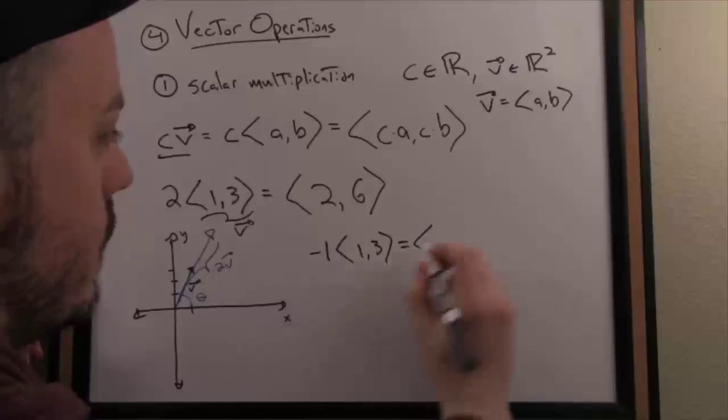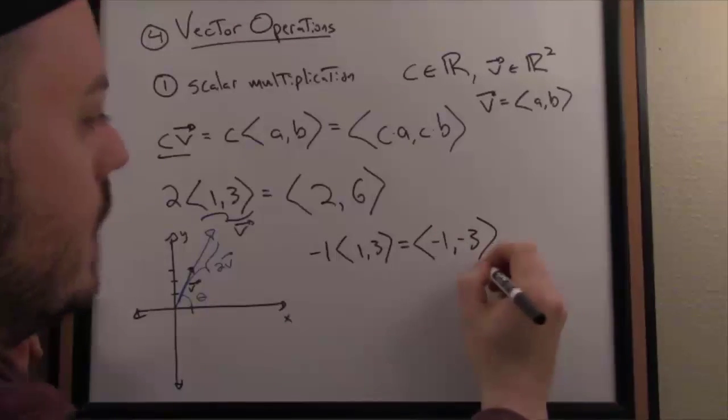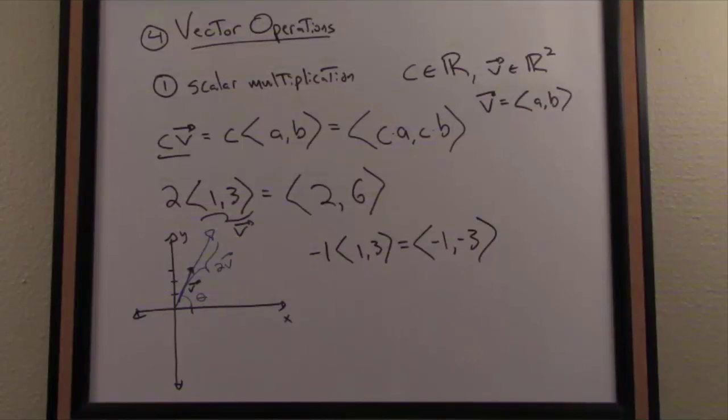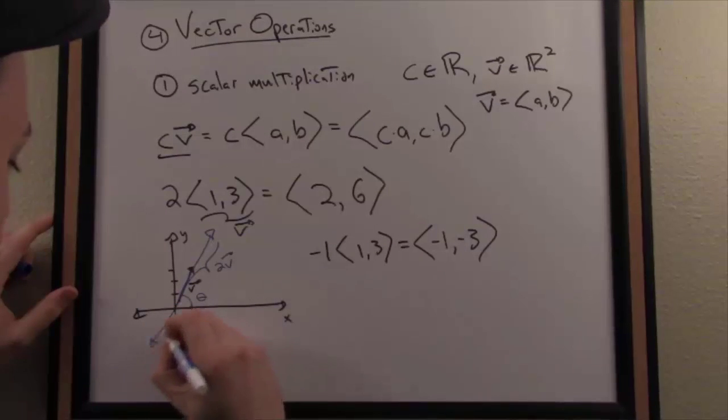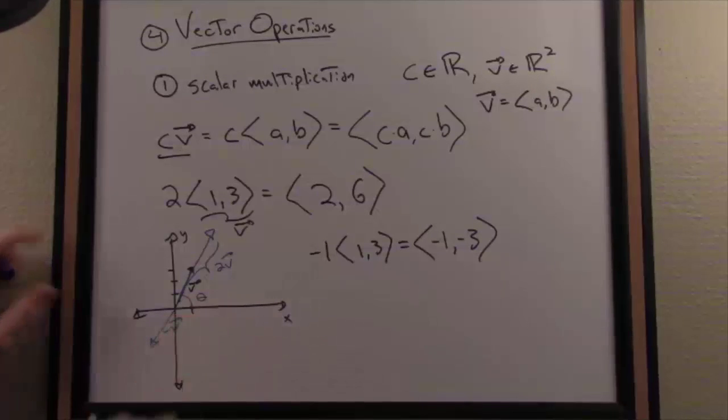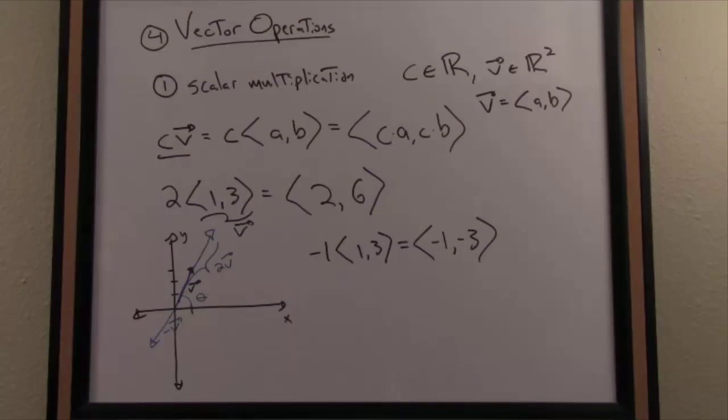Well, algebraically, I distribute that scalar across the components, and what do I have here? I have the exact same vector, that original vector, now just pointing in the opposite direction. So once again, if there's my vector V, negative V would just reflect through the origin, and would point in the opposite direction. Similarly, if I multiplied by negative 2, it would flip the orientation of the vector, so it would point in the opposite direction, but it would also scale it by value 2. So this would be the vector negative 2V.